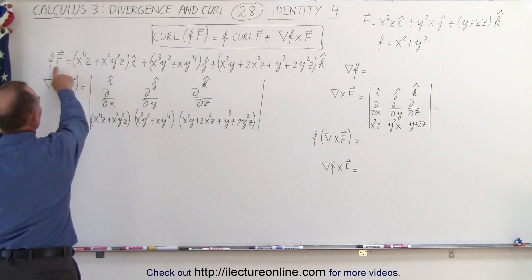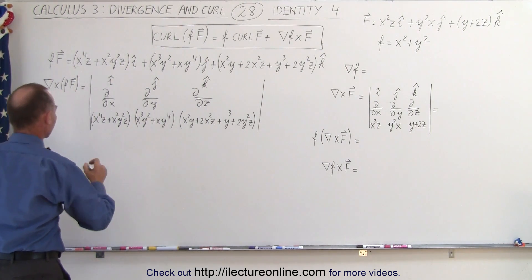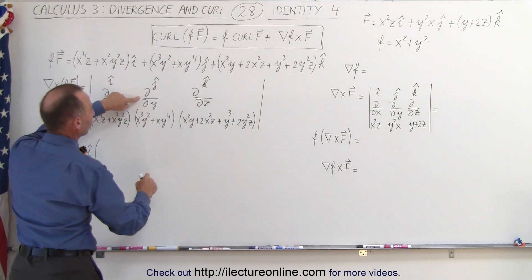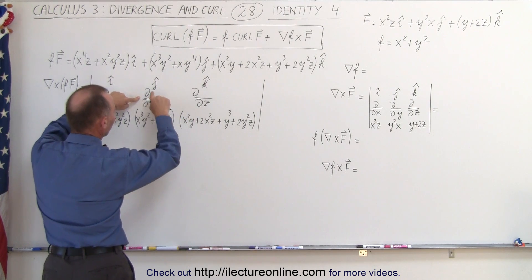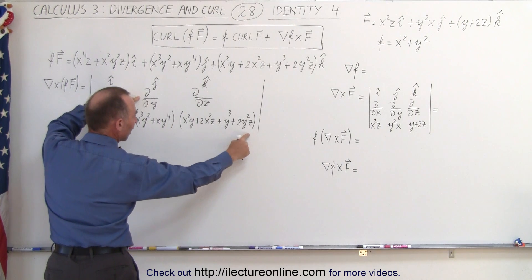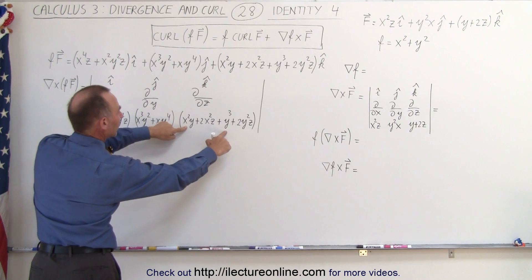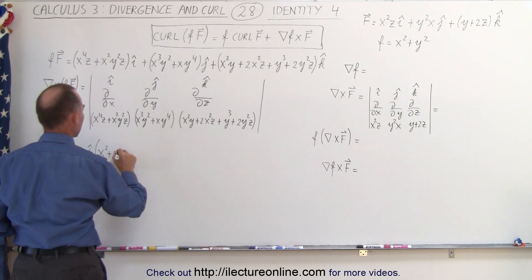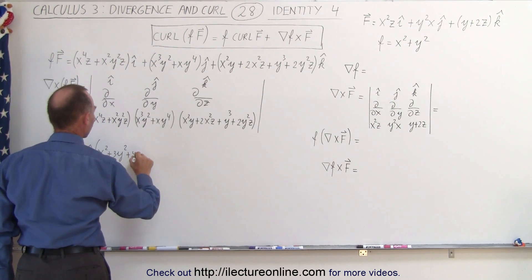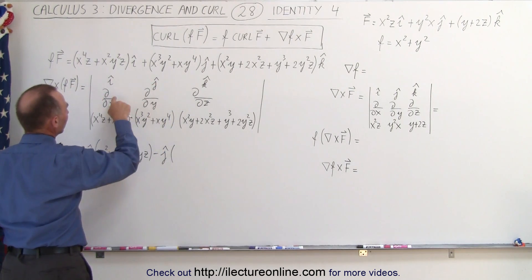Let's work out the left side — the curl of the product of the scalar function and the vector field. This equals I times the partial with respect to Y of this quantity. Notice we have three terms with a Y in it: X squared, plus 3Y squared, and 4YZ, minus the J component.